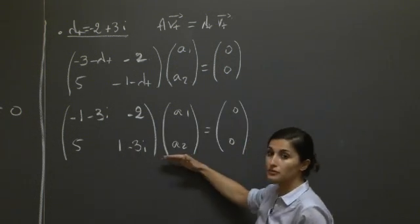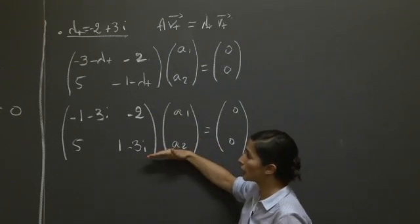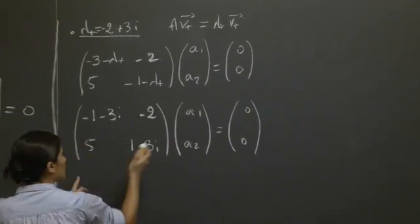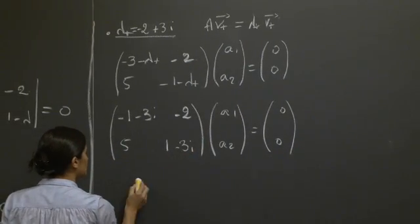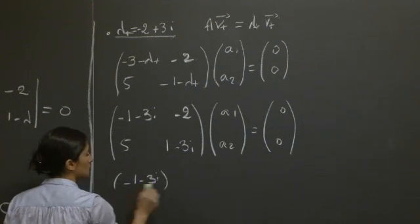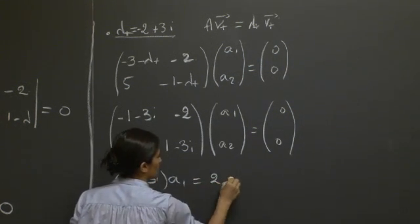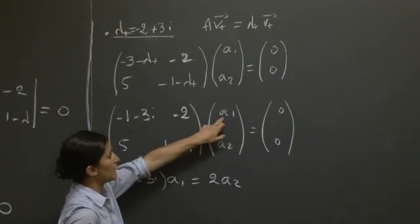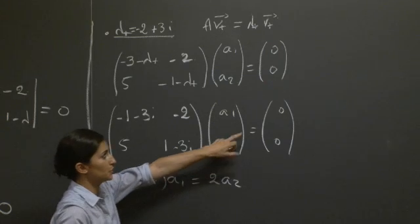a1, a2 equals to 0, 0. So here, you can check for yourself that these two equations given by the first line and the second line are actually the same. And so basically, to get a1, a2, it is sufficient to just solve for, for example, the first one. Where here, I just wrote minus 1 minus 3i multiplied by a1, minus 2 a2 equals to 0.